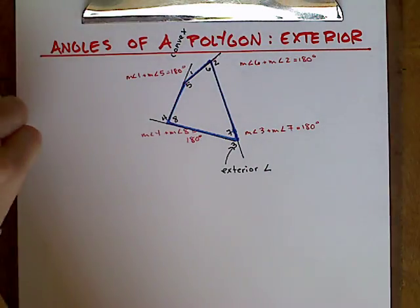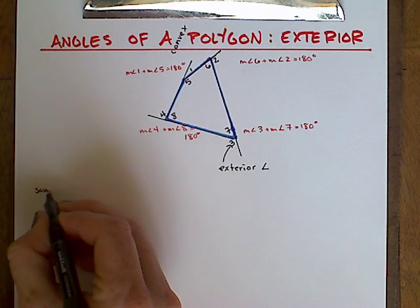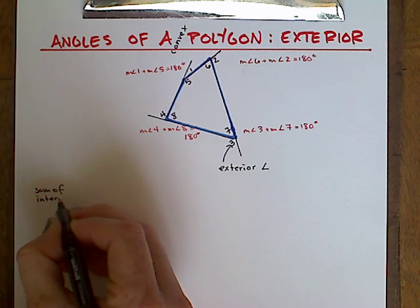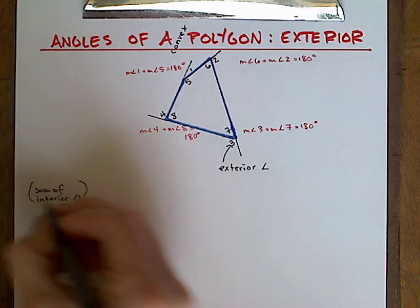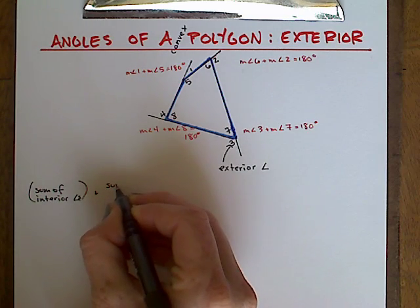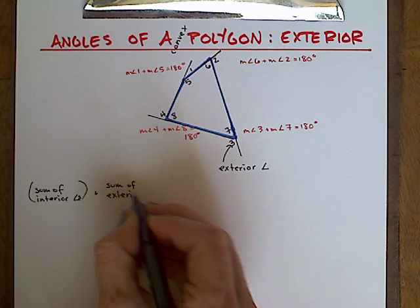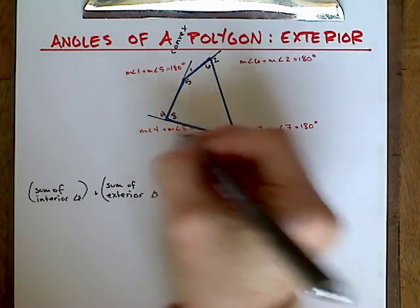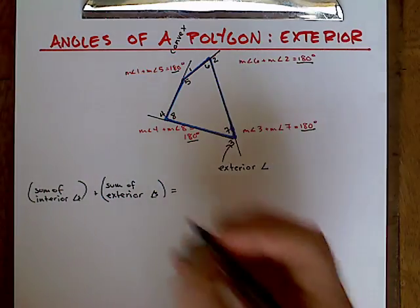Since we have four sides, we have four sums of 180 degrees. So logically, if we take the sum of the interior angles and add it to the sum of the exterior angles, basically we're taking one, two, three, four, five, six, seven, and eight and adding them all together. We're going to get all four of these 180 degrees. In other words, four times 180.